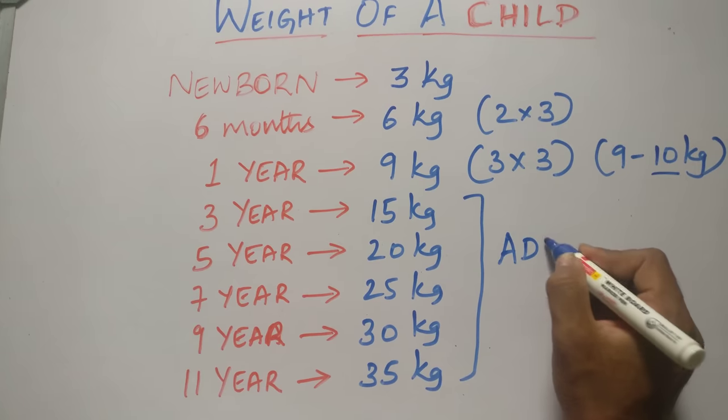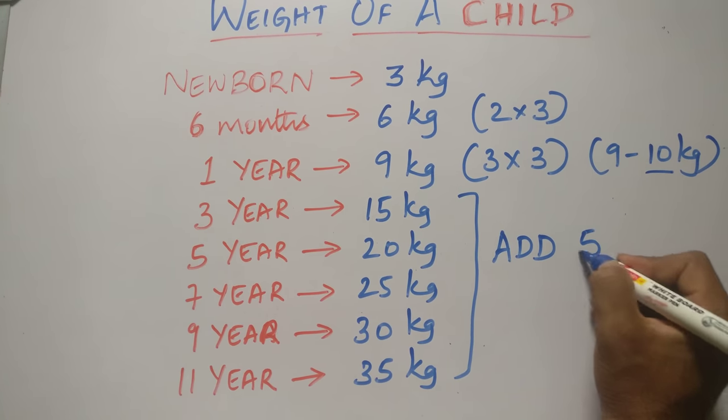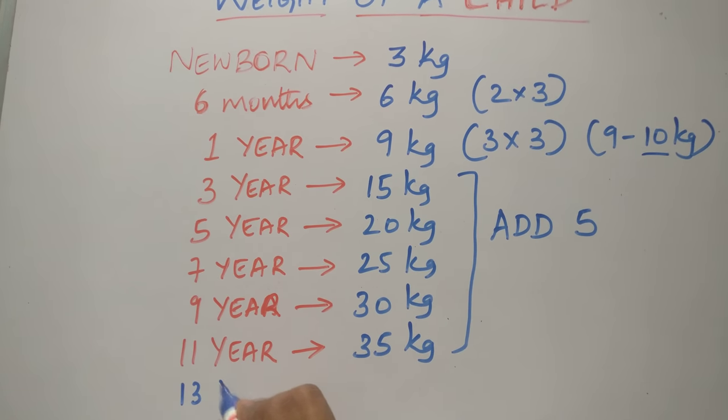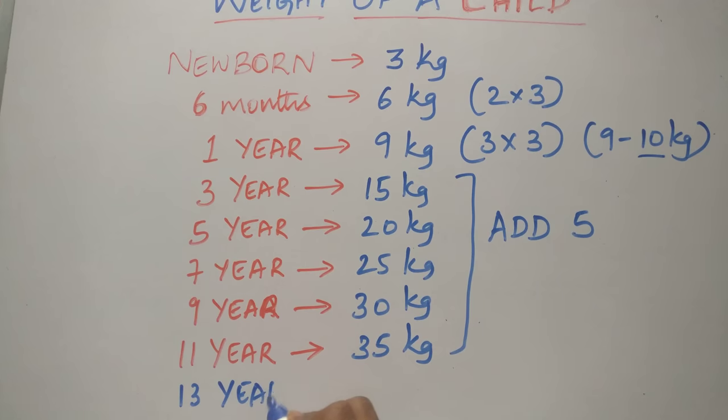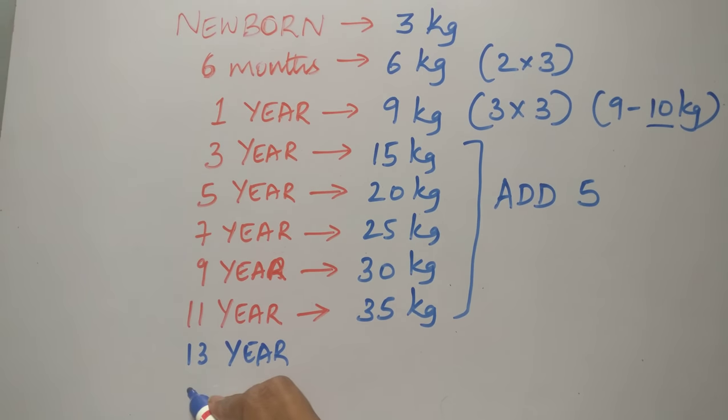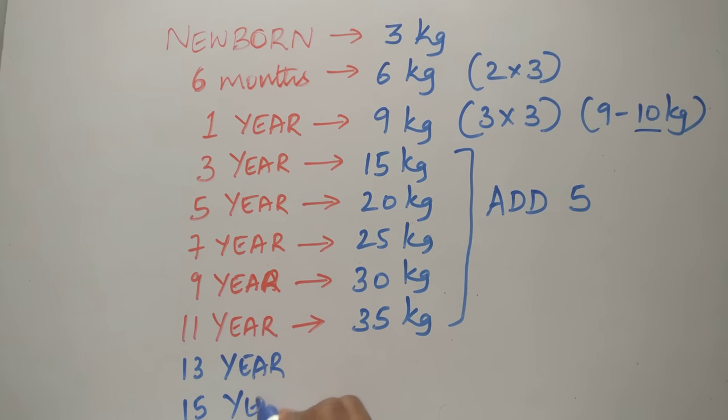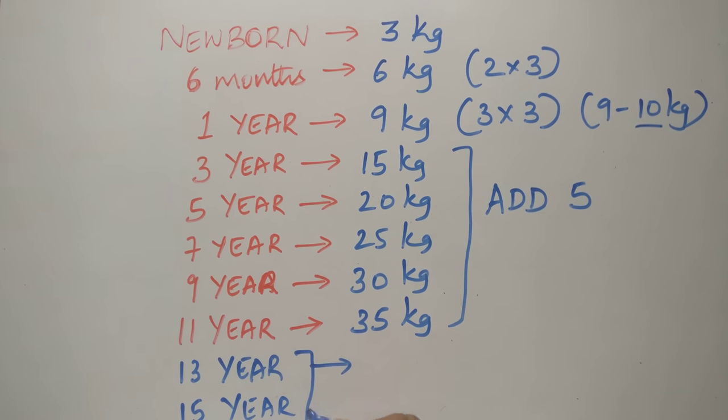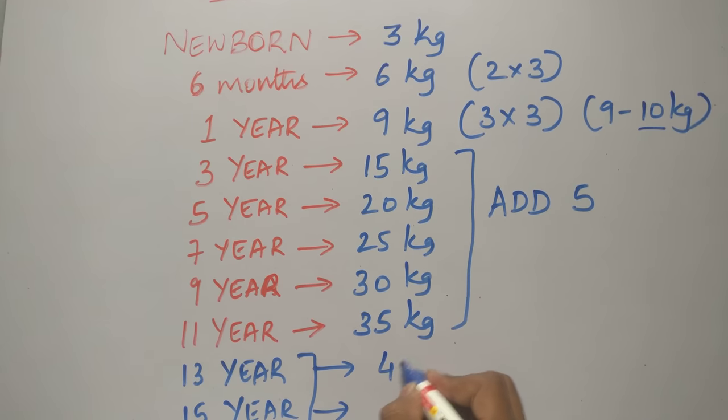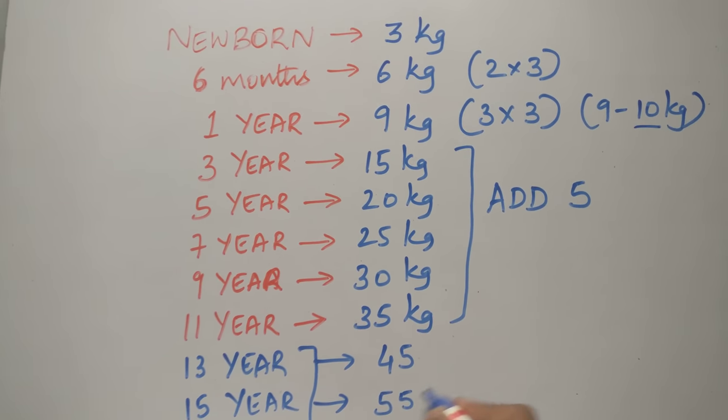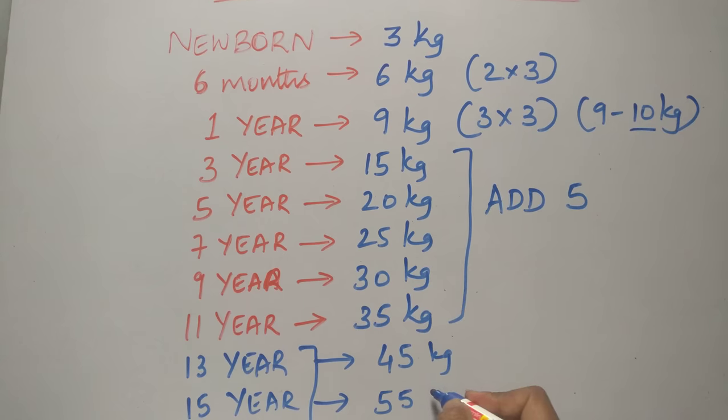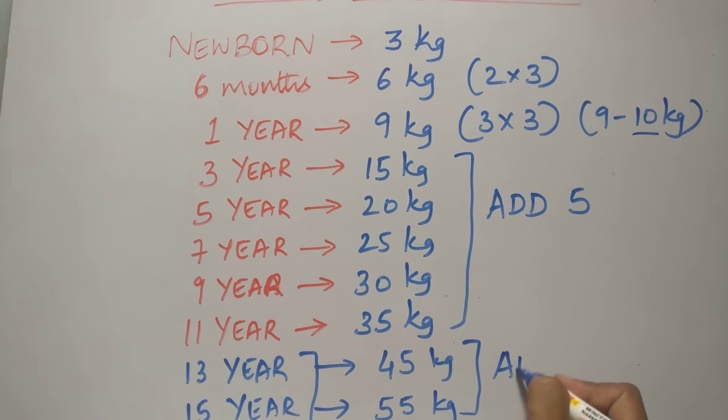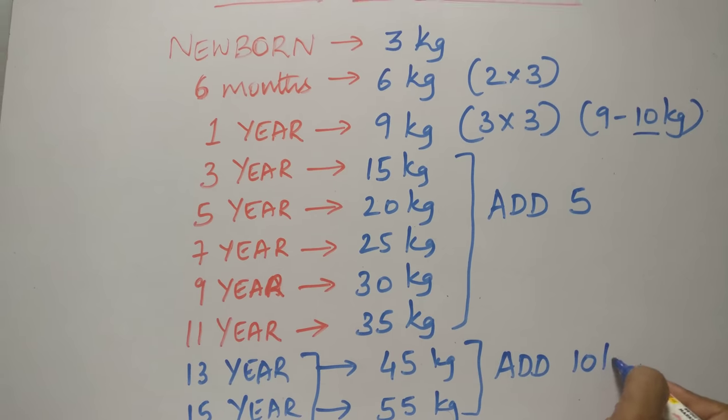Just add 5 to every odd year. You can also remember the weight at 13 years and weight at 15 years as 45 kgs and 55 kgs. How do I do that? By just adding 10 kgs.